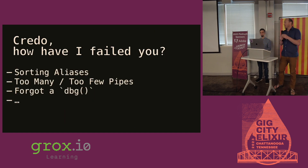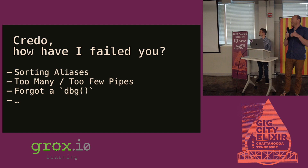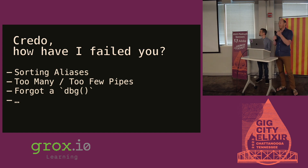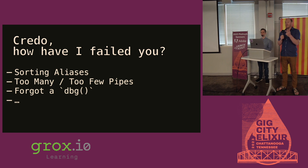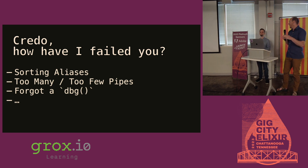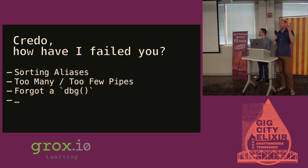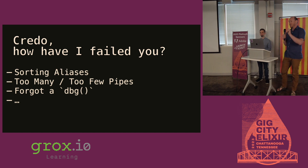What are the ways that you can get those Credo failures that you're just like, oh, really? The big one for me is always sorting aliases. I'm bad at the alphabet, frankly. I don't know where those letters go. Too many pipes, too few pipes — it's this nuanced thing. How many pipes should be in my thing? Well, just one is wrong, you need more. Or that thing isn't a good start of a pipe, you need to add another pipe.